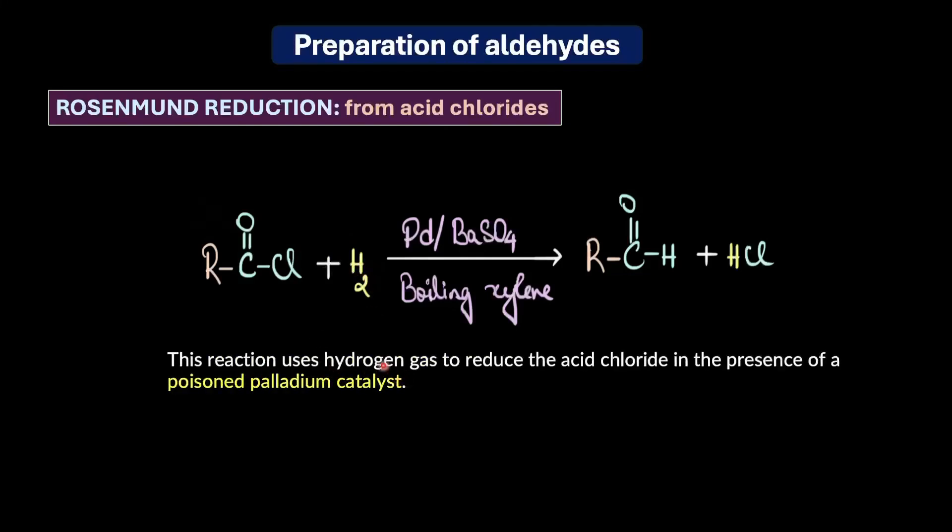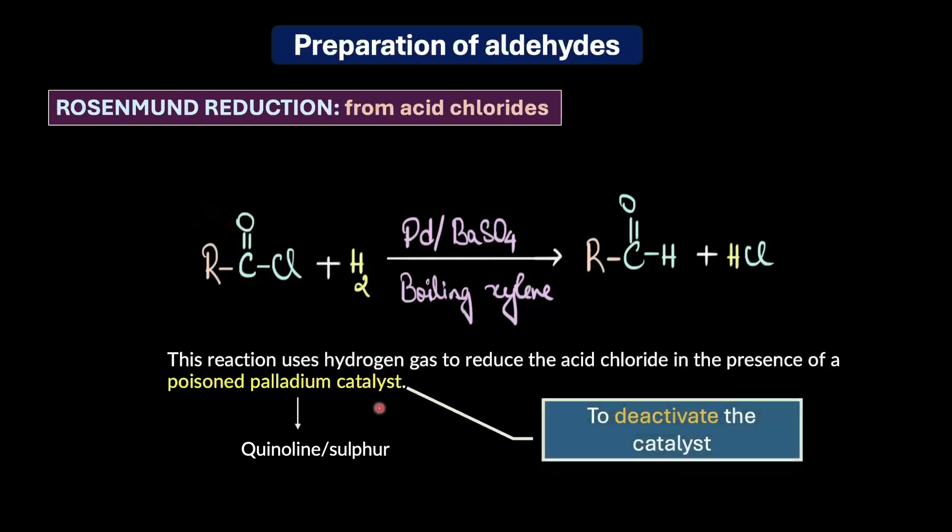This catalyst is poisoned with quinoline and sulfur. What do we mean by poisoning a catalyst? It essentially means deactivating or moderating the reactivity of a catalyst. The question is why do we need to do that in the first place? Why do we need to moderate the reactivity of a catalyst?